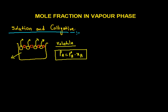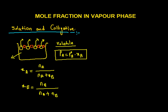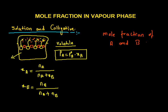We also have a formula to find the mole fraction of a liquid. The mole fraction of A is Xa = nA / (nA + nB), and similarly for solute: XB = nB / (nA + nB). But this is the mole fraction in the liquid phase. Now suppose the system is enclosed in a closed container — some particles of A and B will be in the vapor phase, and we want to find their mole fractions in that vapor phase.